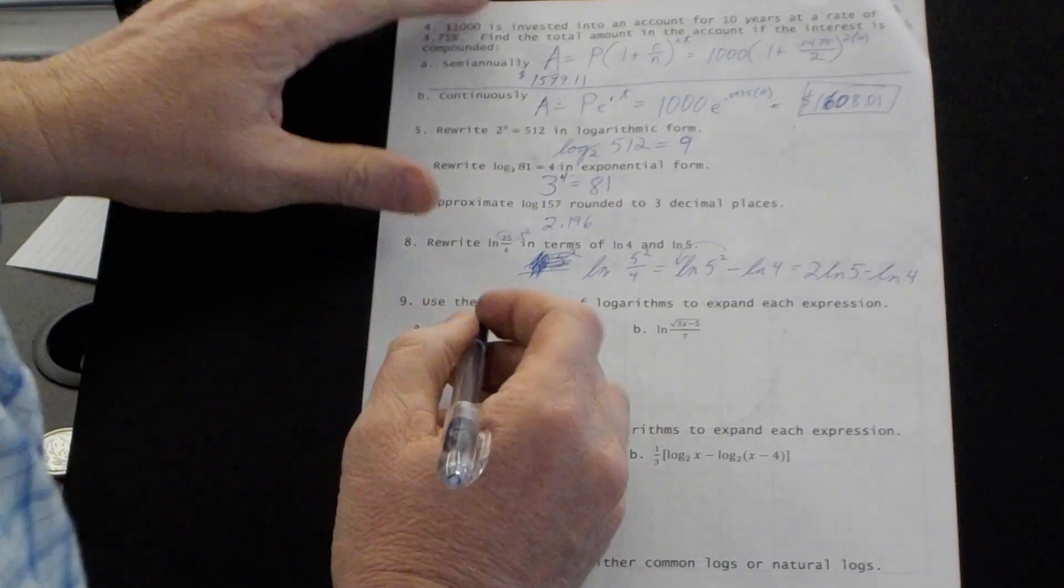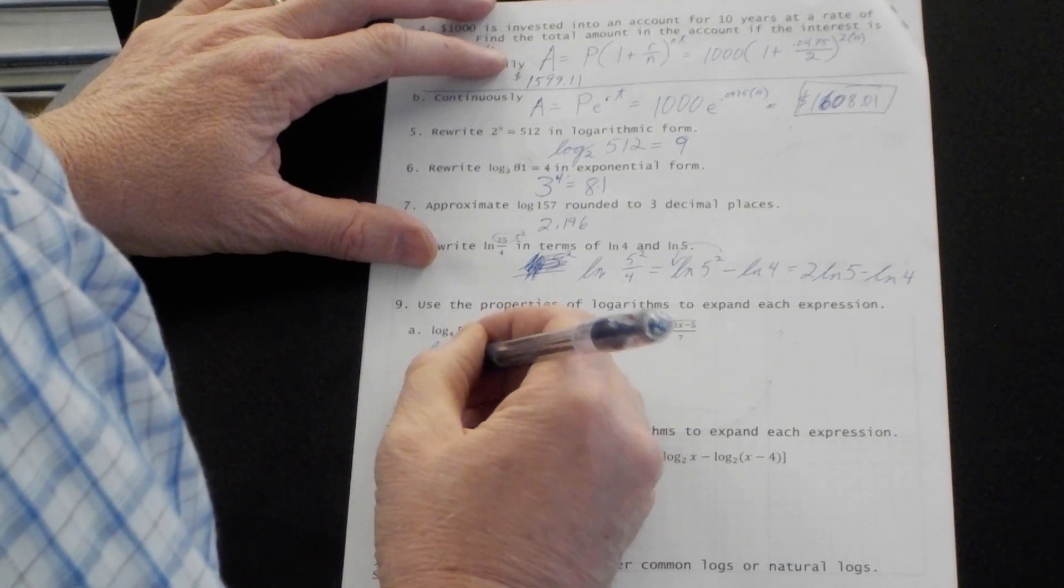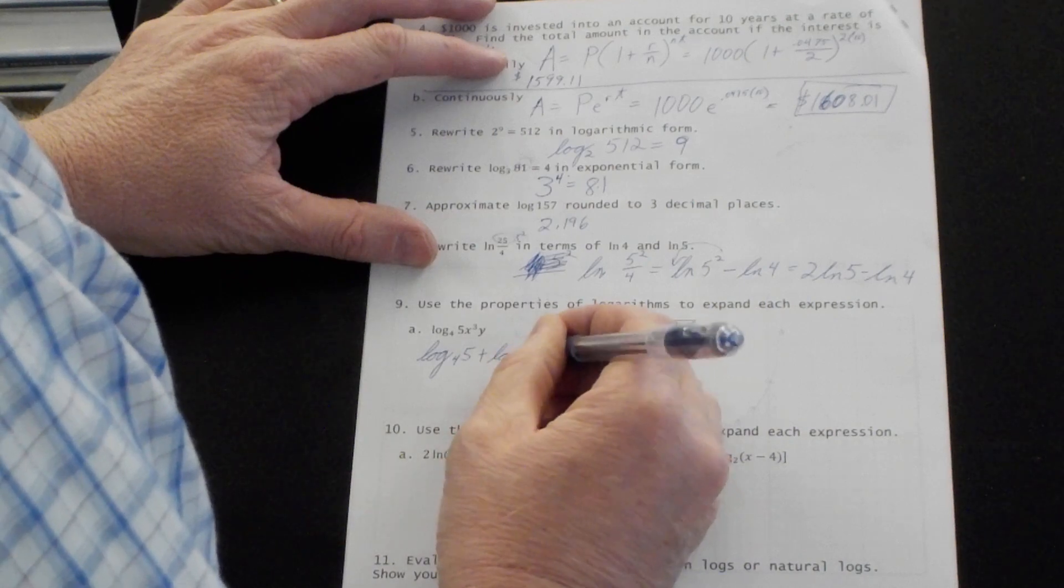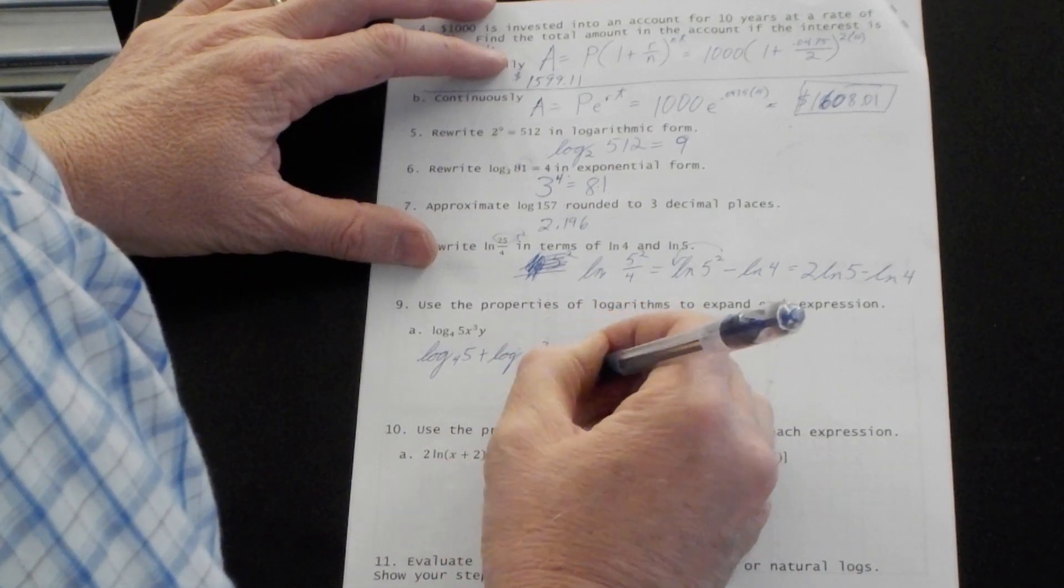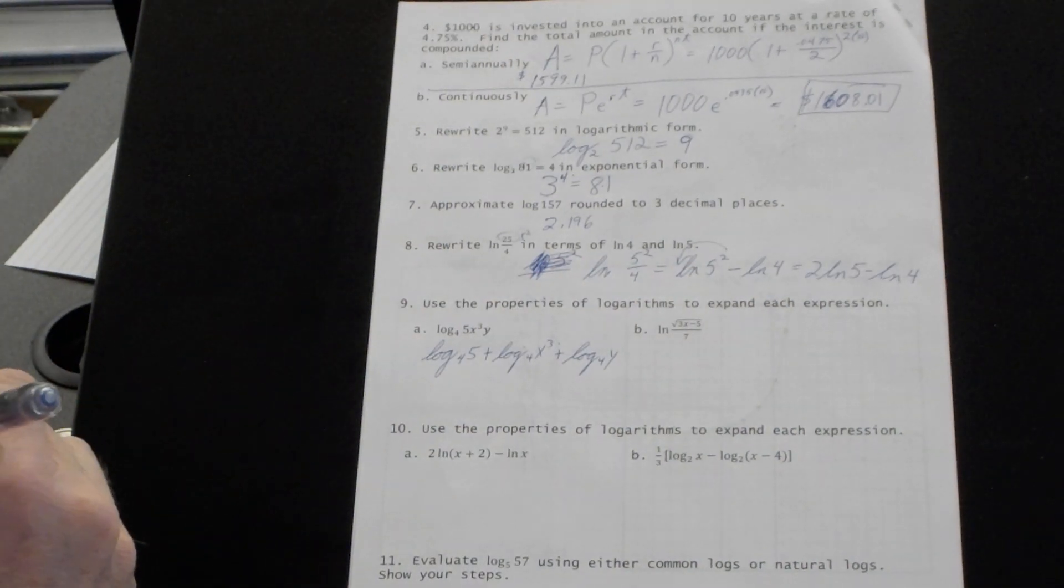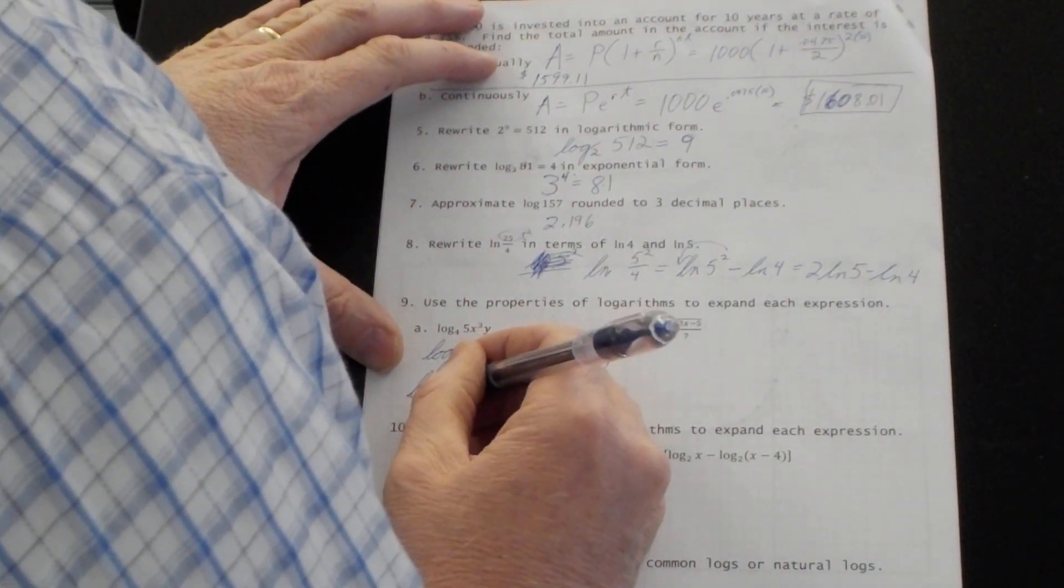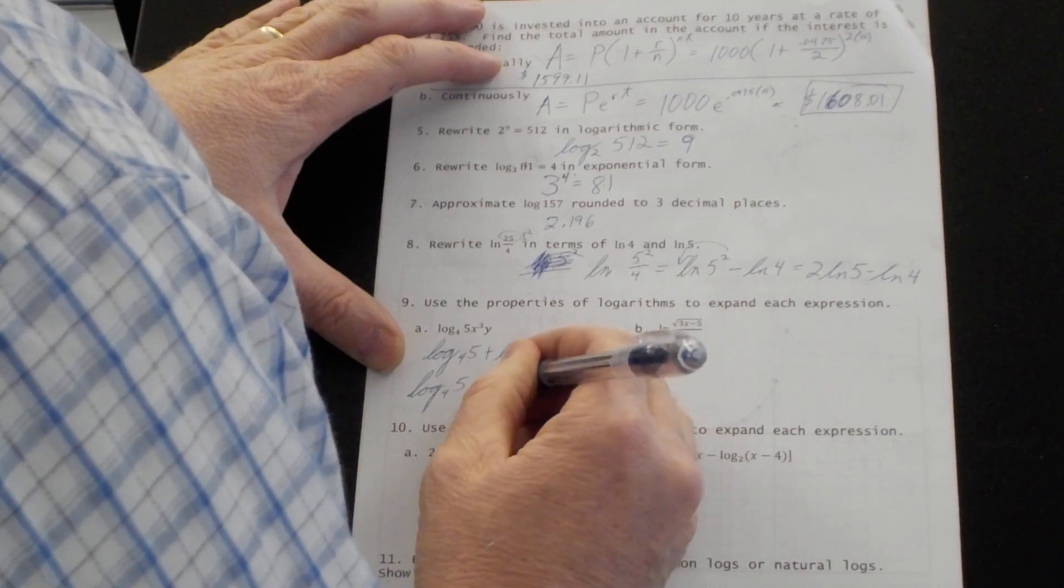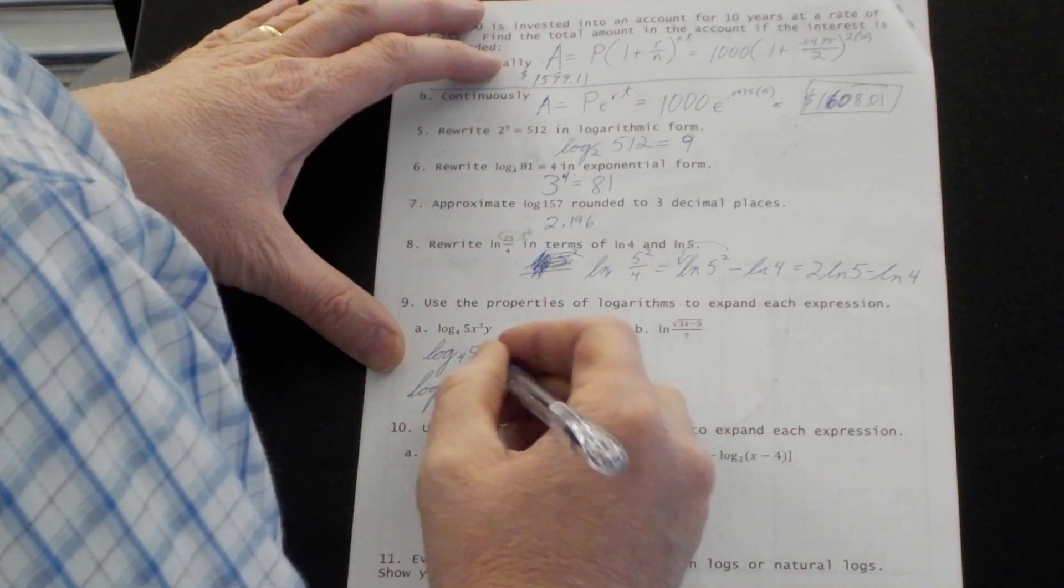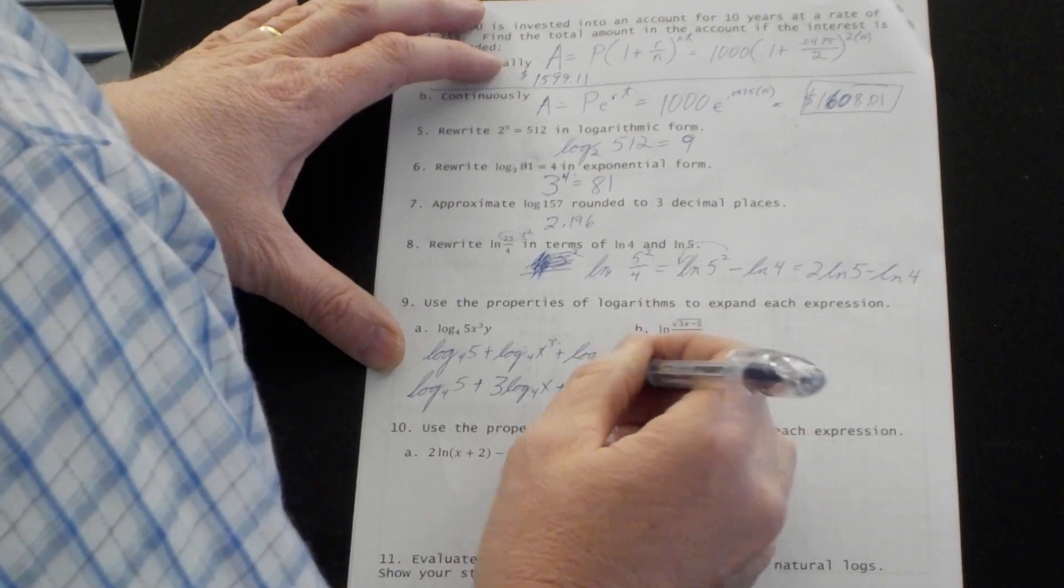Number nine. To expand this one. This is this times this times this. We multiply log base 4 of 5 plus log base 4 of x cubed plus log base 4 of y. That is the product property. And that's the log base 4 of 5 plus 3 times log base 4 of x. The power property there plus the log base 4 of y. And I think I'll just stop there for the answer.